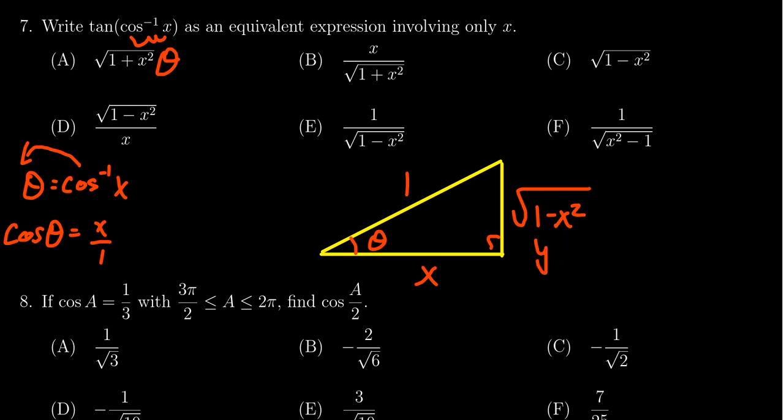Basically, you have this other side here, y. You have that x squared plus y squared equals one squared. If you solve for y, you'll get exactly this expression right here.